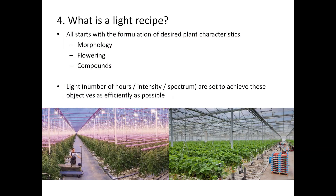When developing a light recipe, it all starts with the formulation of the desired plant characteristics. In some plants, compactness is appreciated, whereas in others, abundant and early flowering is a major selling point. In other species, high antioxidant levels can be an important argument for a premium selling price. Depending on such a formulation, a light recipe can be developed that is optimal for the crop.